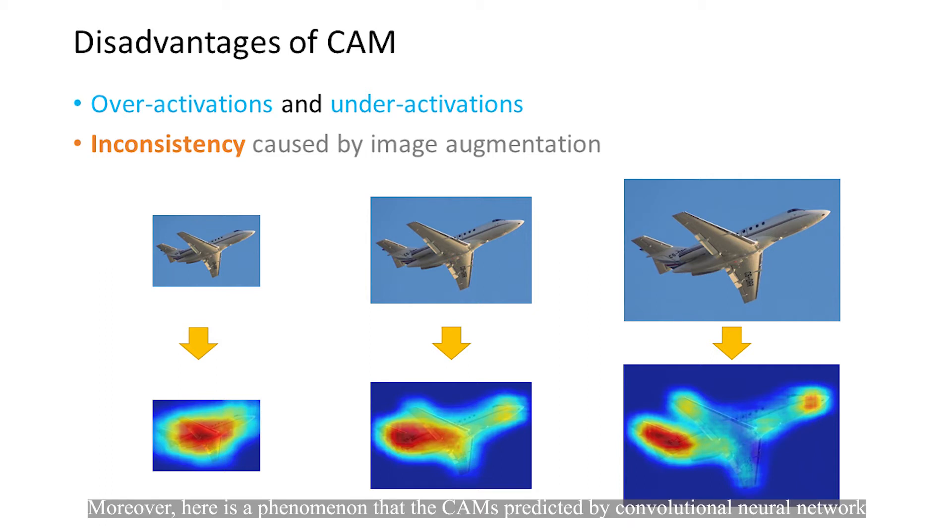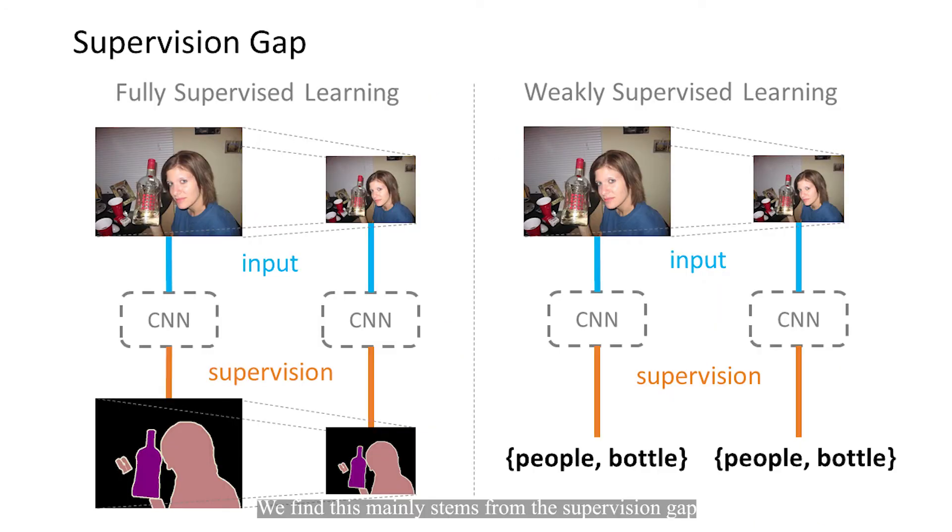Moreover, here is a phenomenon that CAMs predicted by convolutional neural networks are hard to be consistent when the input images are augmented by various visual transformations. We find this mainly stems from the supervision gap between fully and weakly supervised semantic segmentation.